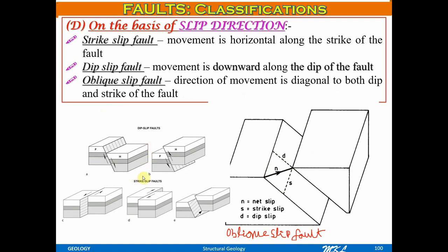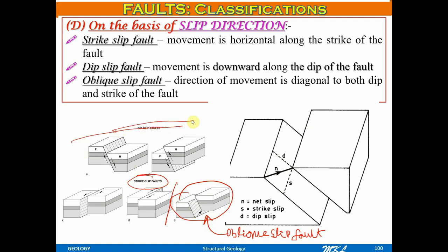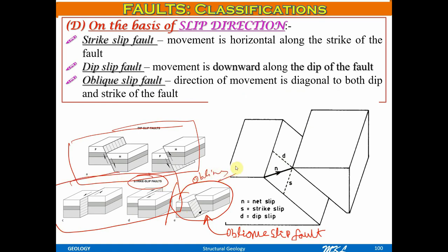To clarify from the diagram: the two shown are dip slip faults, one is the strike slip fault, and one is the oblique slip fault.